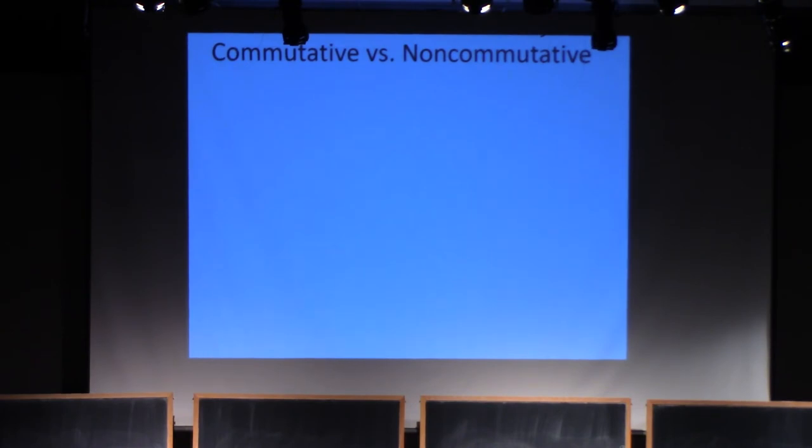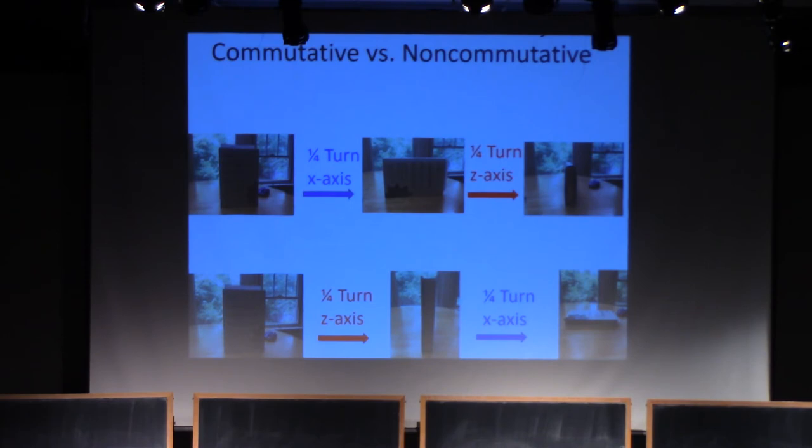Another place where we encounter non-commutative and commutative operations is in rotations. If you consider rotations around a fixed axis, then that's commutative. But if you consider rotations around different axes, that's non-commutative. I met a colleague the other day on the trail who helps me illustrate this. This is the x-axis, and that's the z-axis. If I first do a rotation by a quarter around the x-axis, and then around the z-axis, I get one kind of orientation of the bear. On the other hand, if I rotate around the z-axis and then the x-axis, I get a completely different orientation of the bear. Thank you very much.